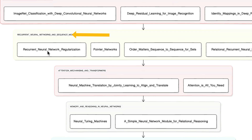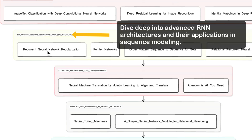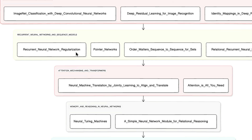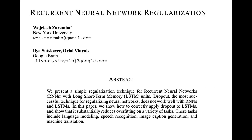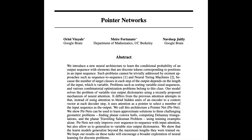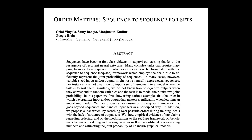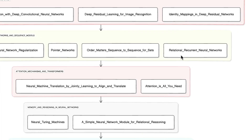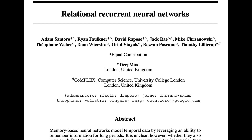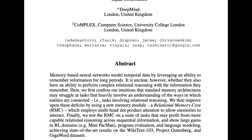Then we have Recurrent Neural Networks and Sequence Models, where you deep dive into advanced RNN architectures and their applications in sequence modeling. Papers include 'Recurrent Neural Network Regularization' to learn techniques preventing overfitting in RNNs, 'Pointer Networks' to discover how attention creates variable-length outputs, 'Order Matters: Sequence to Sequence for Sets' to understand processing unordered inputs, and 'Relational Recurrent Neural Networks' to explore RNNs that reason about entities and relationships.